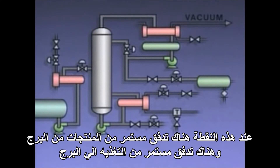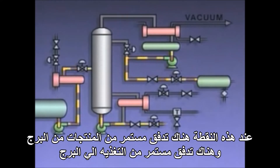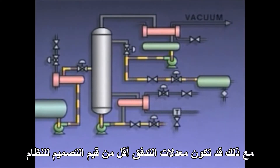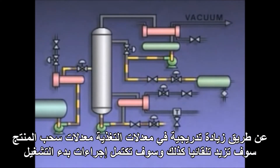At this point in the procedure, there's a continuous flow of product out of the column and a continuous flow of feed into the column. However, the rates of flow may be below the design values for the system. By gradually increasing the feed rate, the product takeoff rates will automatically increase as well, and the startup procedure will be complete.